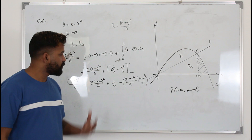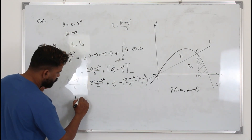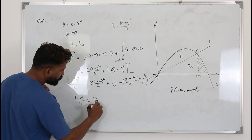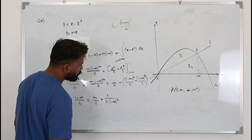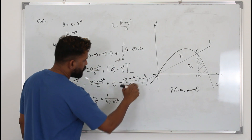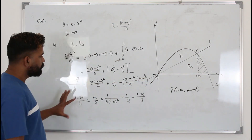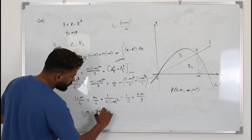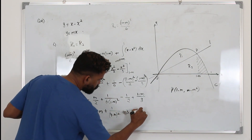We need to carefully simplify to find m. Dividing everything by (1 minus m) squared: the left side becomes (1 minus m) over 6. On the right side we have m over 2, plus 1 over 6 times (1 minus m) squared, minus 1 over 2, plus (1 minus m) over 3. Multiplying everything by 6: 1 minus m equals 3m plus 1 over this expression, minus 3, minus 2 times (1 minus m) terms.